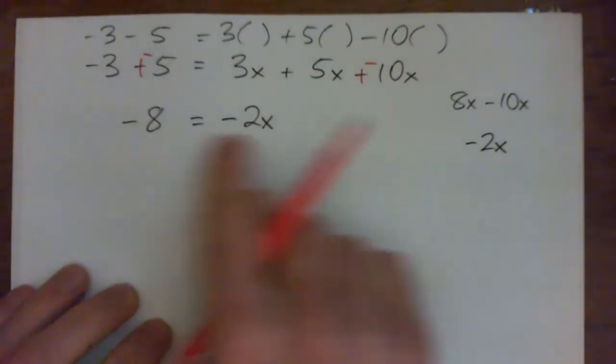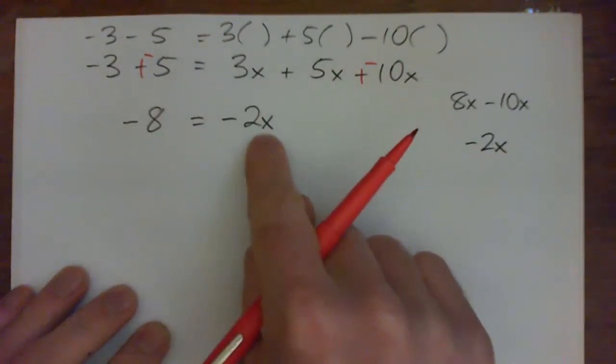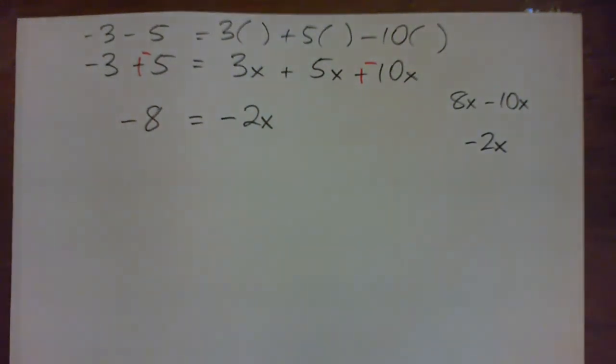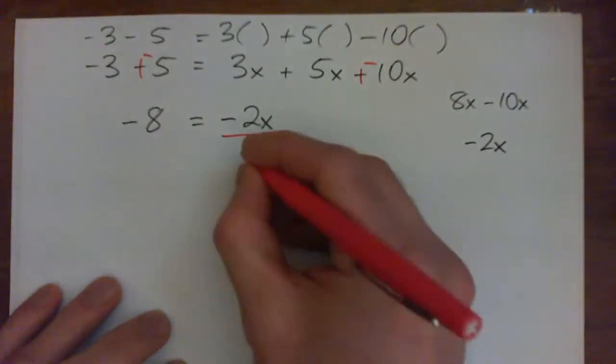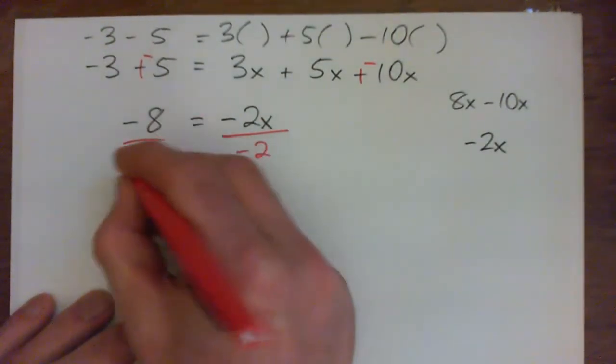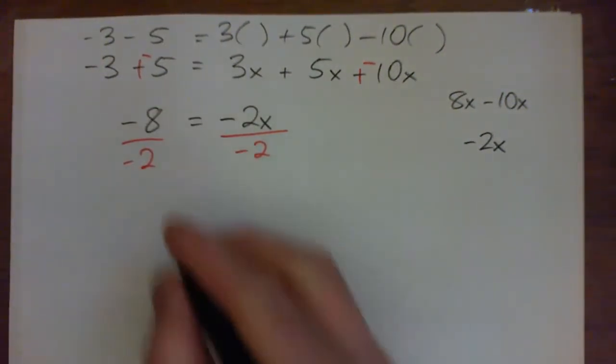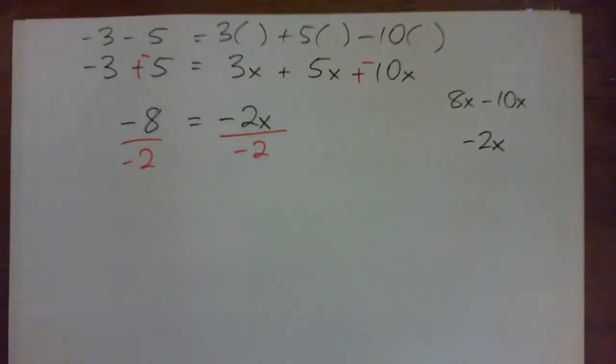Okay, so we have simplified both sides, now we have to solve for x. x has been multiplied by negative 2. So to undo that, the inverse operation is divide by negative 2 also. So on the left, we have negative 8 over negative 2. Negative over negative is positive. And it's a positive 4.